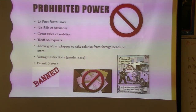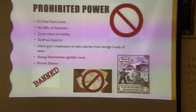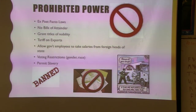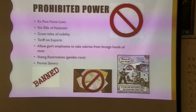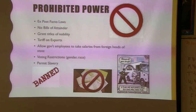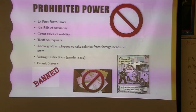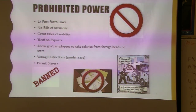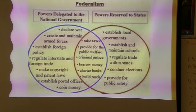Prohibited powers — some are listed in the Constitution, some were added with amendments. For voting restrictions, states are in charge of elections, but Florida cannot deny women or certain races the right to vote. No state is allowed to permit slavery anymore — and that was not always the case. Slavery was in the original Constitution; remember the Three-Fifths Compromise.